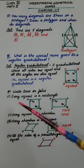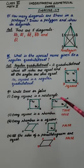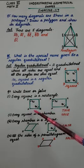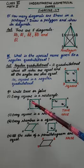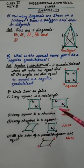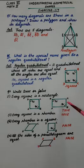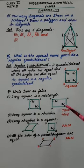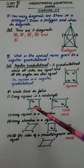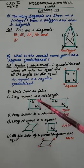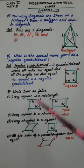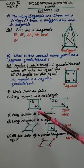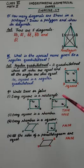Coming to question 7 — true or false. First one: every square is a rectangle. This is a square and this is a rectangle. In a square, all sides are equal and each angle is 90 degrees. In a rectangle, opposite sides are equal and each angle is 90 degrees. So every square is a rectangle — yes, it is true. The property of a rectangle is present in a square: opposite sides are equal. So yes, square is a rectangle.